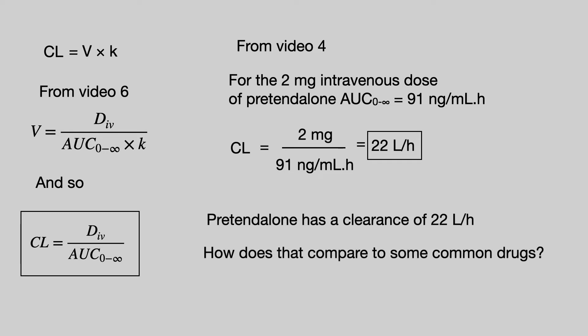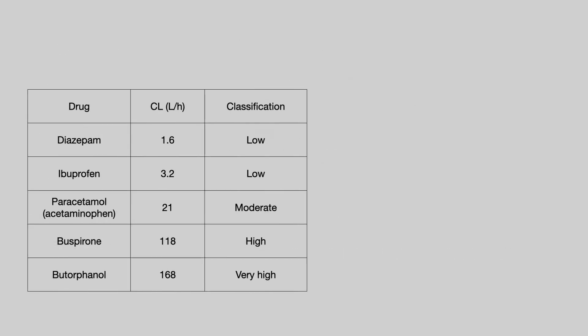How does that compare with some common drugs? Here is a table of a number of drugs. You can have fairly low clearance, such as diazepam at 1.6 litres per hour, or really very high clearance, exemplified by butorphanol at 168 litres per hour.